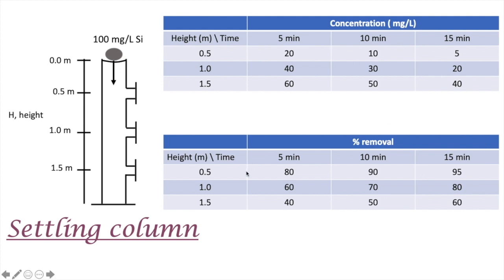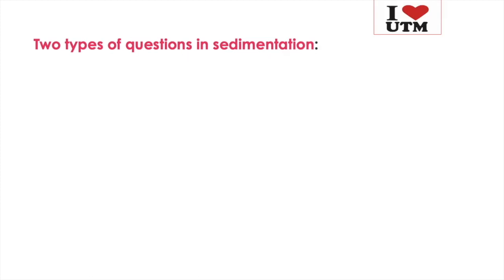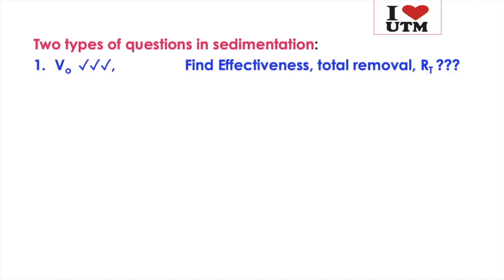There are two types of questions in the sedimentation topic. The first type: the overflow rate v_naught is given, and you need to find the effectiveness of the tank — sometimes called the total removal, or R_T of the tank.